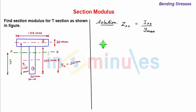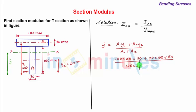Now we know the formula of y bar which is equal to a1 y1 plus a2 y2 upon a1 plus a2. So we have a1 is breadth into depth meaning 100 into 20 mm multiplied by y1 is 110 mm plus a2 is breadth into depth so 20 into 100 mm into y2 is 50 mm. This whole upon a1 plus a2 which is 100 into 20 this part plus 20 into 100.